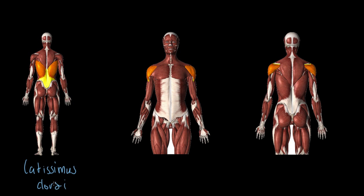This one here is called the latissimus dorsi. Now what does this muscle actually do? It sits here on the back and it's kind of wing-shaped. If your shoulders were up in this position, maybe pulling a bar down from above on some kind of pulley — if you were to pull down in this direction, the latissimus dorsi would be the primary muscle that caused that.